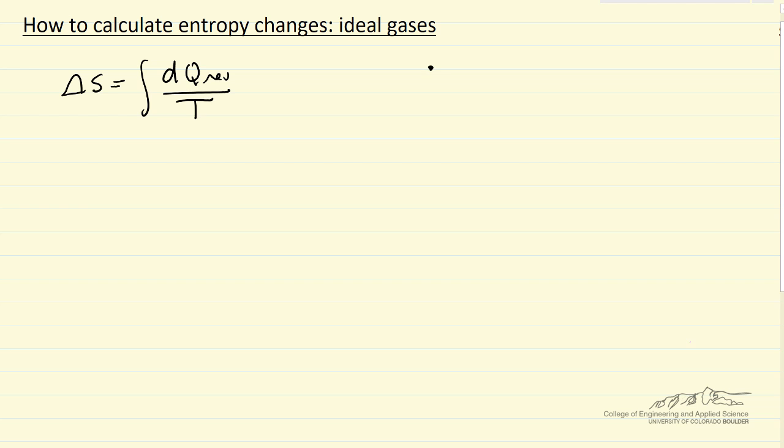So the idea is we're at state one, some pathway to state two. As long as that's a reversible pathway, we can calculate the entropy change between states one and two because entropy is a state function.